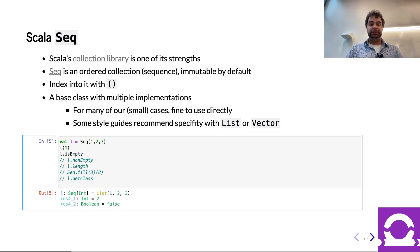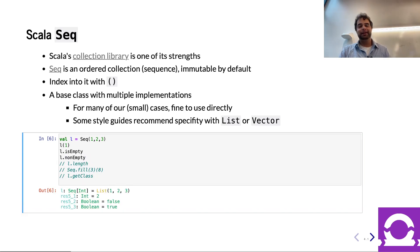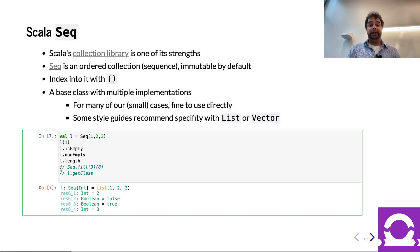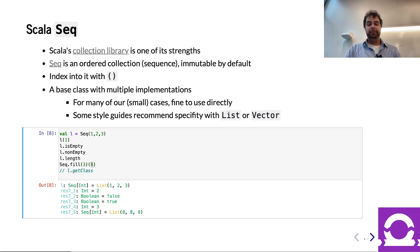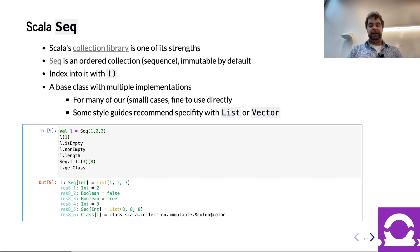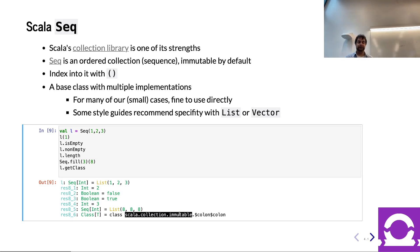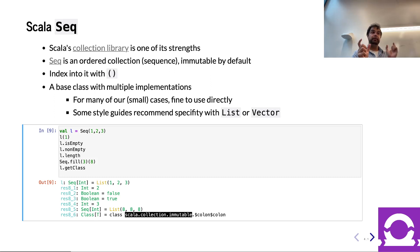You can fill a Seq — for example, three instances of eight. You might ask what class you're working with. The reason I show this is so you recognize: this is immutable. Seqs, if you just declare them without thinking about it, are immutable by default in Scala. Scala's collections often have both a mutable and an immutable version. In this course, I tend to use only one flavor — for Seqs, always immutable. There is a mutable version if you import it specifically, but don't use that.